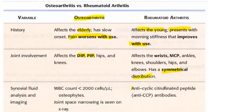In osteoarthritis, the distal interphalangeal joints have Heberden nodes, and the proximal interphalangeal joints have Bouchard nodes. For synovial fluid analysis, WBC will be less than 2000 cells in osteoarthritis.